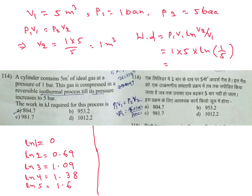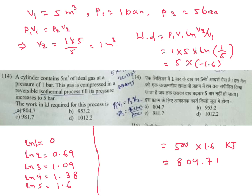So ln(1/5) means minus 1.6. Only minus will come here. So 5 into minus 1.6. This is in bar, so for kilojoule you have to multiply by 100. So 500 into 1.6 — already compression — you will get 804.7 kilojoule. A is the answer.